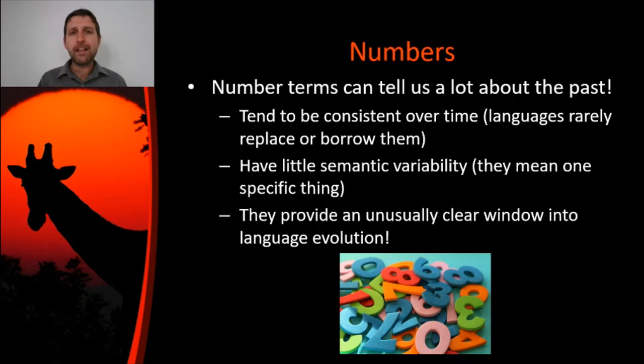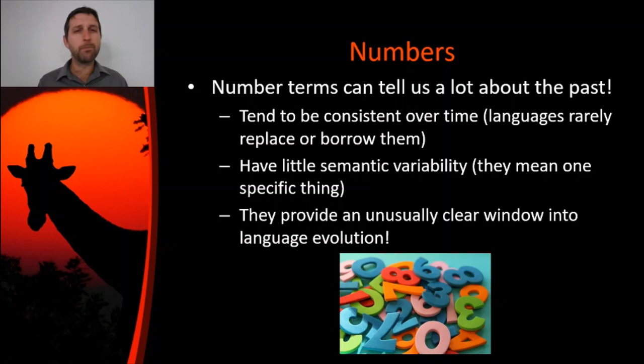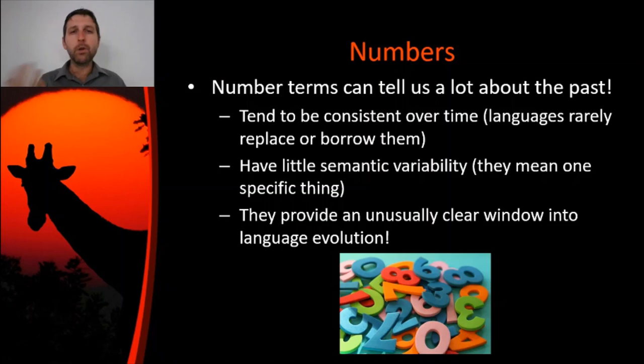So when you put all this together, numbers provide an unusually clear window into language evolution. As we do this countdown from 10 to 1, I'm going to use this to talk about some principles of historical linguistics and how we think we can know anything about words that anybody said 4, 5, 6,000 years ago. If they never wrote them down, if they didn't have tape recorders, how do we know what those words might have sounded like? I'm going to give you a behind-the-scenes peek at how we do this kind of research.